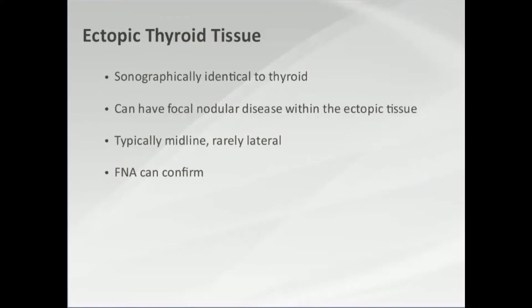Sometimes what you're seeing in the neck is thyroid that didn't read the book and showed up in the wrong place. When you look at it, it's going to look just like the thyroid gland. It's acting just like a thyroid gland, and if you have a multinodular thyroid gland, you can get nodules in your ectopic thyroid as well. Typically these are in the midline, either above or below the gland.